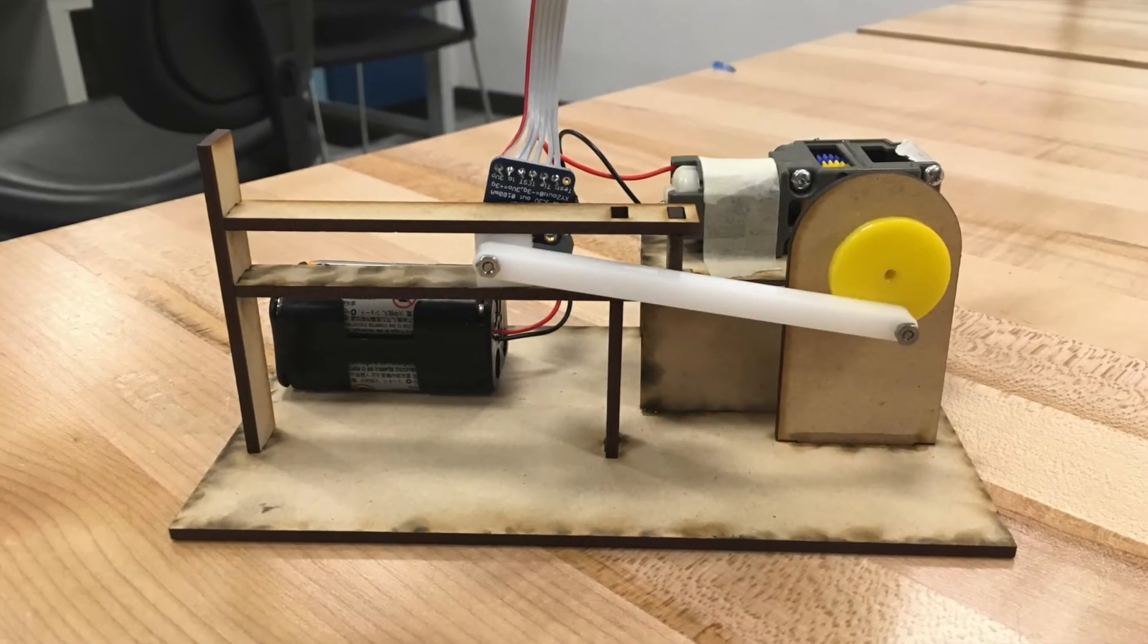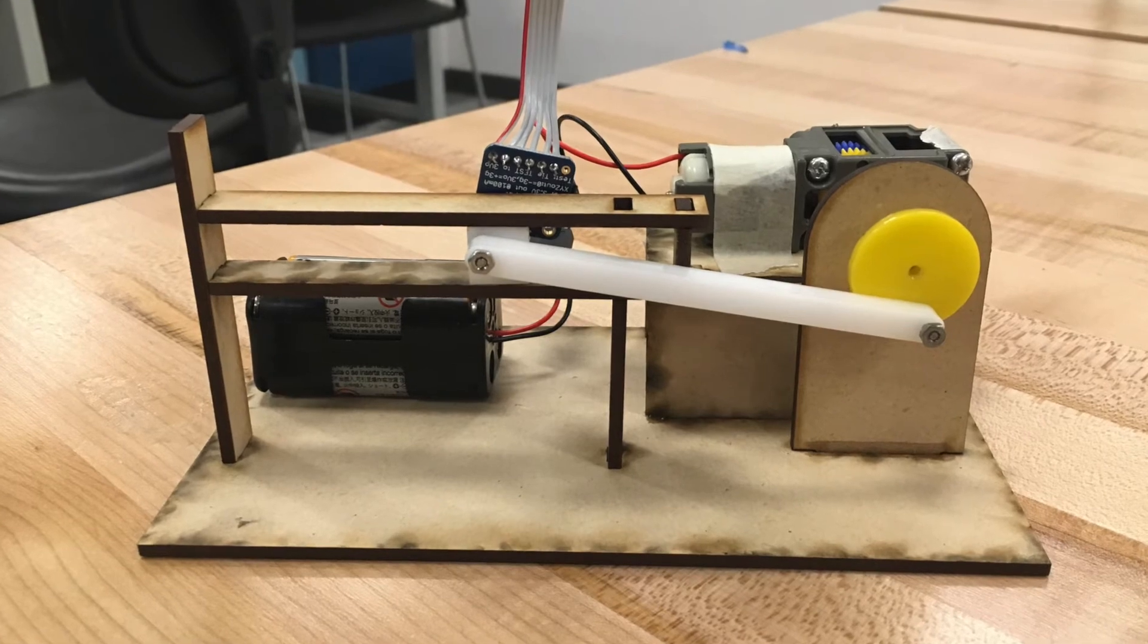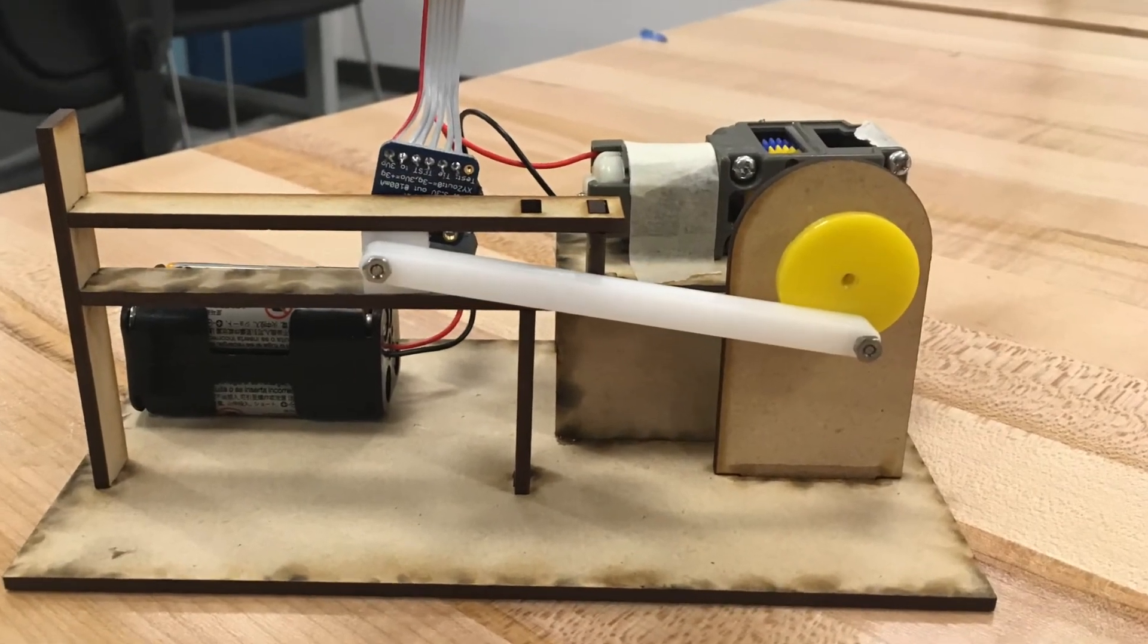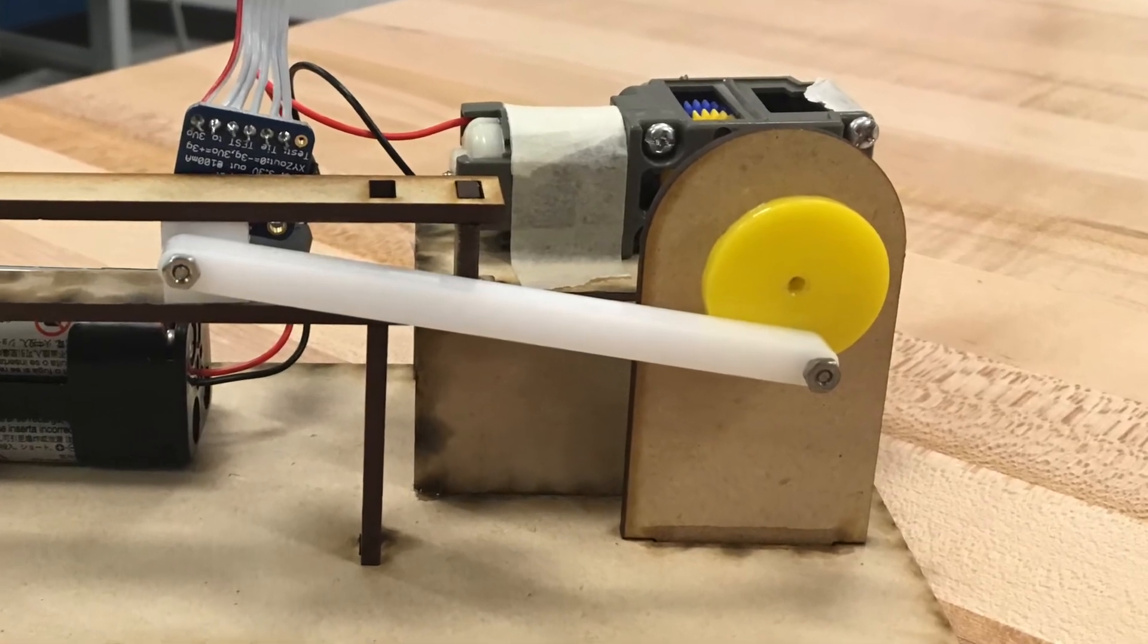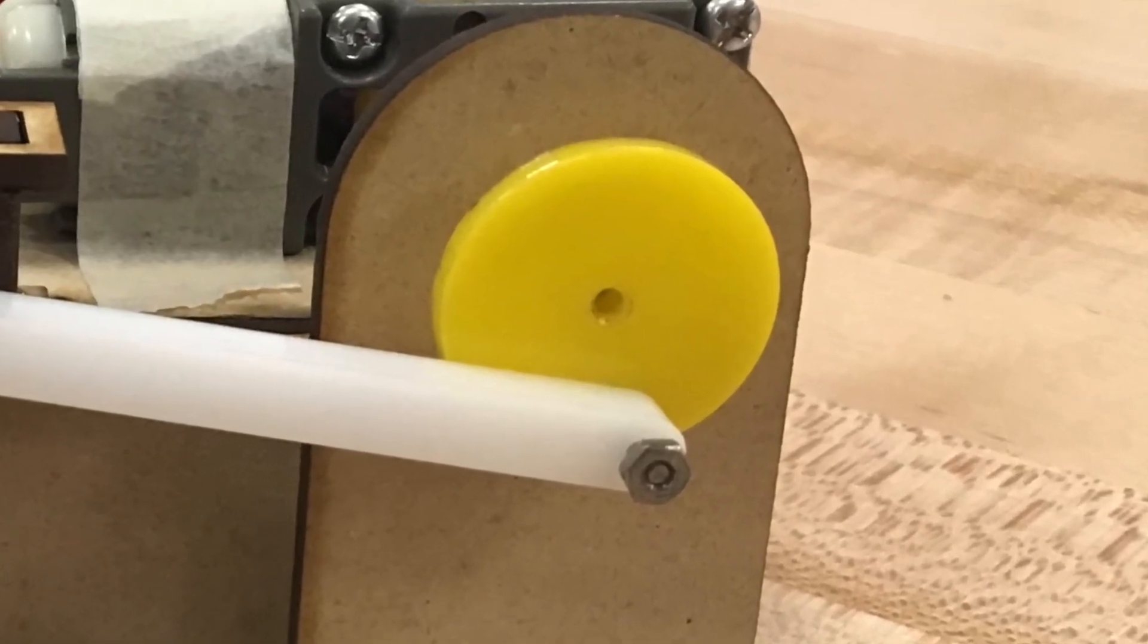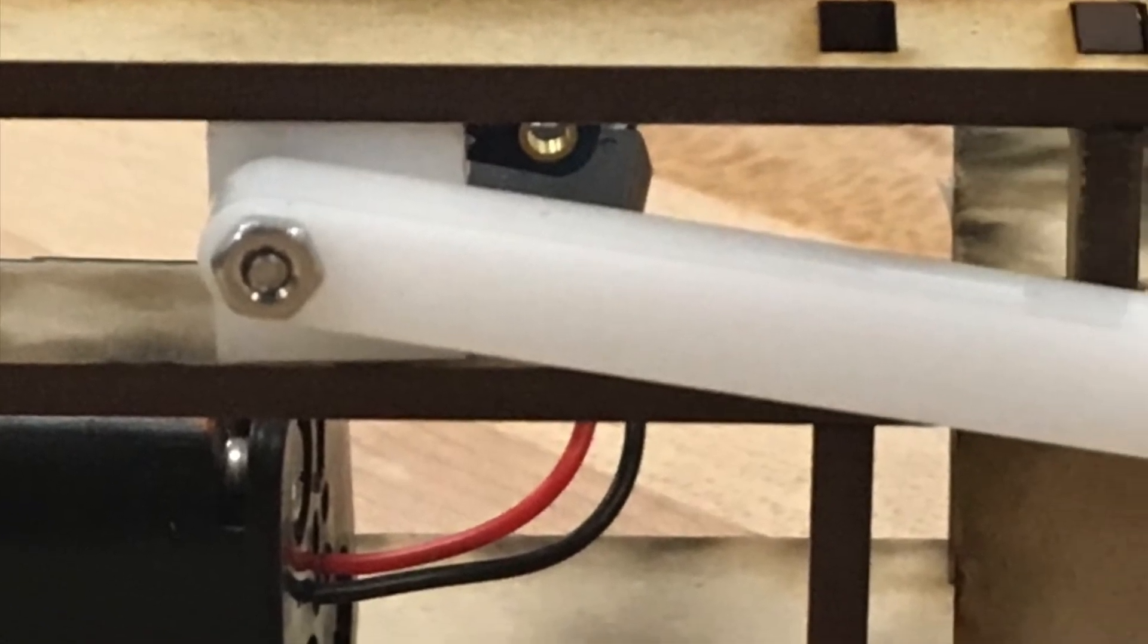When it came to fabrication, it was important for us to figure out how to connect pieces in a way that was secure, but also did not limit a range of motion. Originally, the wheel piece was meant to be attached to the gearbox using a set screw, but we ended up pressing it on directly, which still worked.